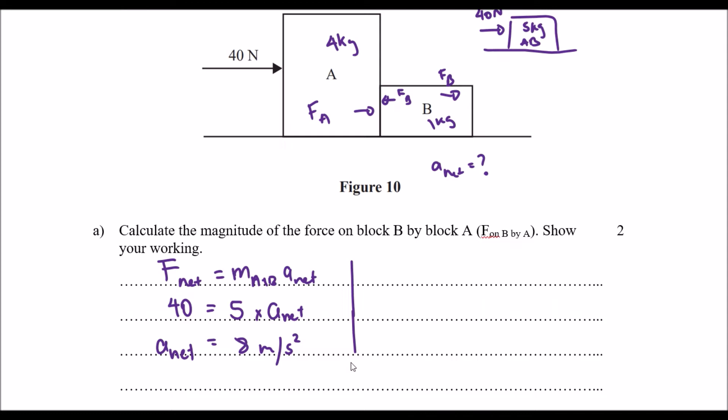Calculate the magnitude of the force on block B by block A. So we need to find the overall force that block B is experiencing at this point in time, and so to speak, the amount of force that block B is experiencing to be pushed this way, that is what block A is applying to it. Block A is applying that amount of force to push block B at 8 meters per second squared.